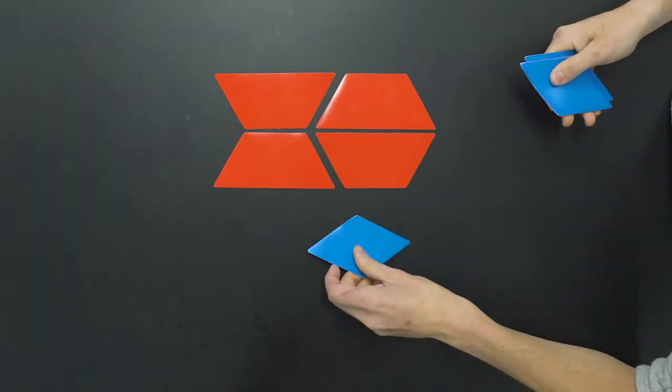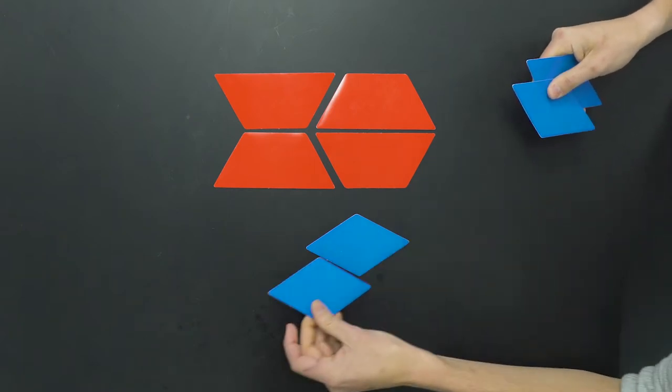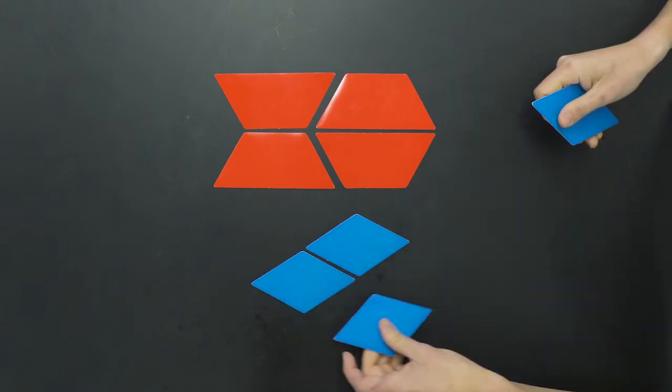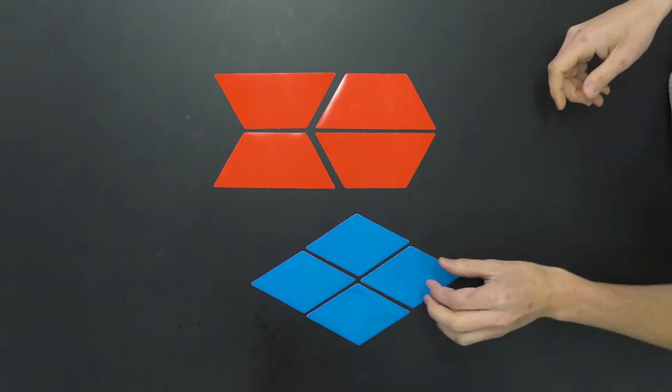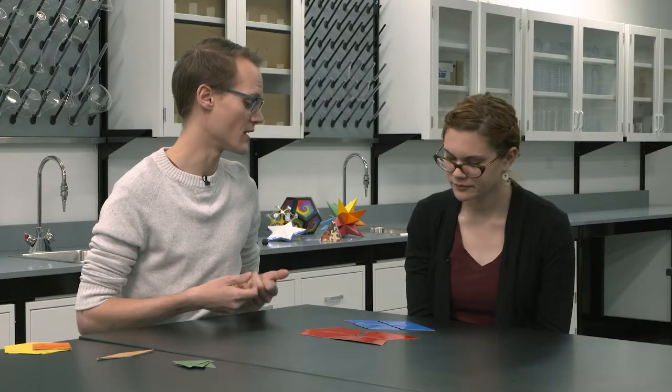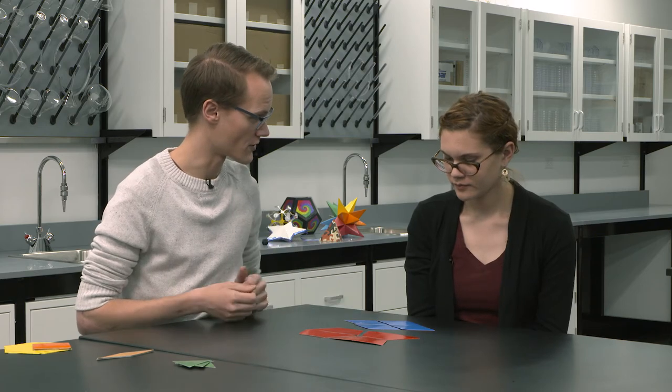So that's with trapezoids. And now if we go over to rhombuses, we can see a similar thing happens here where now that's our shared point. But again, it's not exactly the same. Not all the corners are the same. Okay.